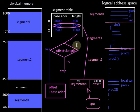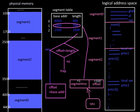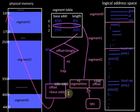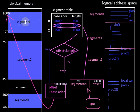If the offset is valid, we obtain the physical address by adding the offset with the base address. Here, it is 1000 plus 100, which equals 1100. This physical address points to segment number 1 within the physical memory at word number 100, from where we can access our required word or byte. This is how address translation works in segmentation.